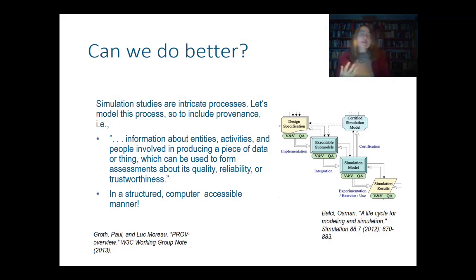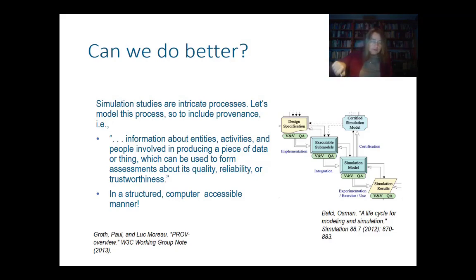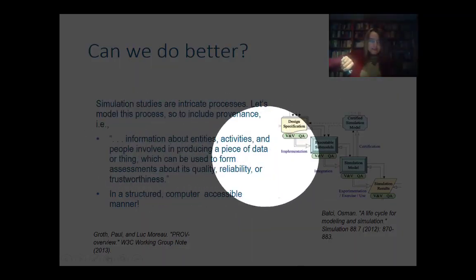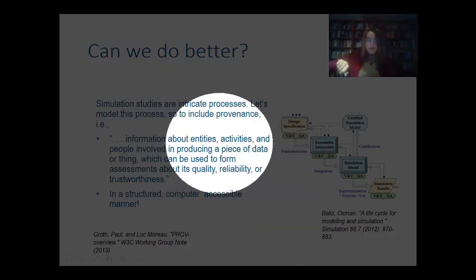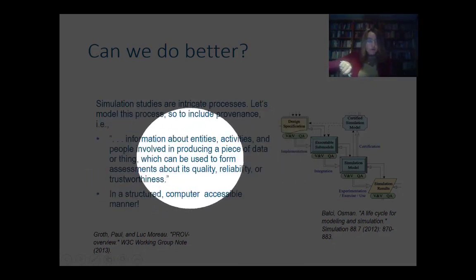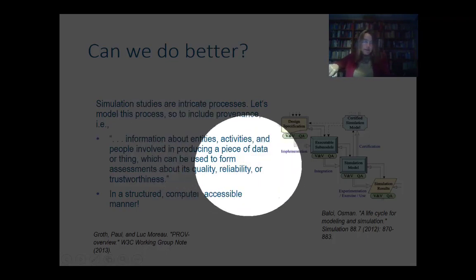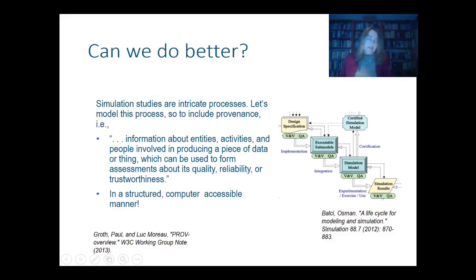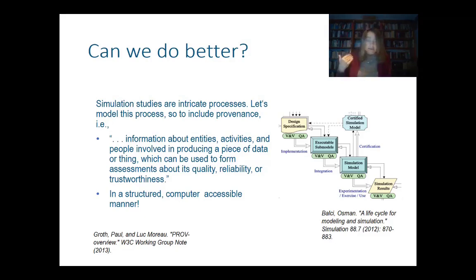How a simulation model came into being — this information we typically call provenance. It is information about entities, activities, and people involved in producing a piece of data or thing, which can be used to form assessments about its quality, reliability, or trustworthiness. That is what we would like to have, because we want to have trust in our simulation models and we want to do so in a structured, computer-accessible manner.